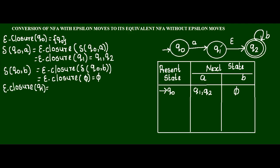Now for the state set {Q1, Q2}: Q1, if input is null, the next state is Q2. Always while finding null-closure of any state, we have to write that same state again, so I am writing Q1. Now if Q1 is the present state with empty string, the next state is Q2, and there are no more states to go to, so I am going to complete this.